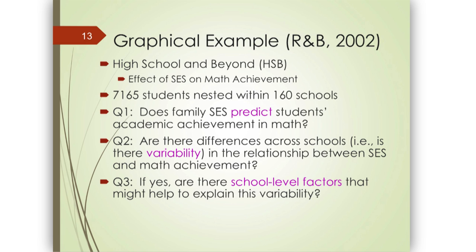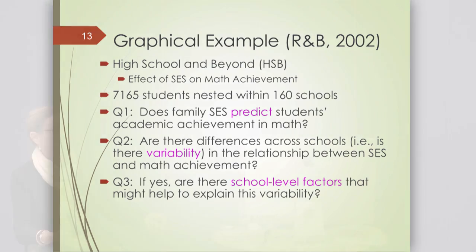This is data from High School and Beyond. The goal of this example is to look at the effect of socioeconomic status on math achievement. We have about 7,000 kids in 160 schools. We're interested in whether the relationship between SES and math achievement is the same across those 160 schools, and if different, are there variables that can help explain why?